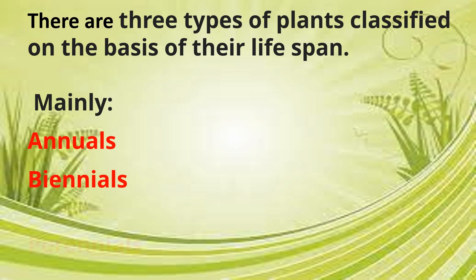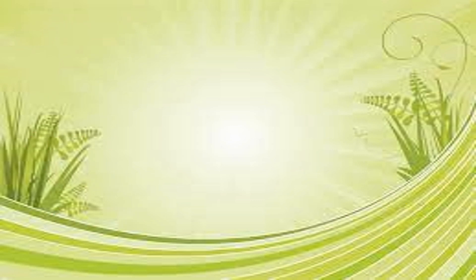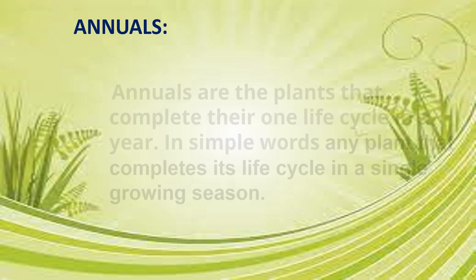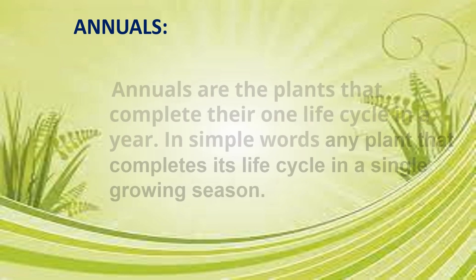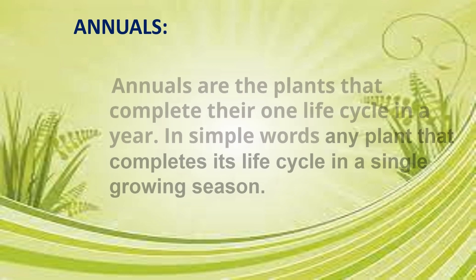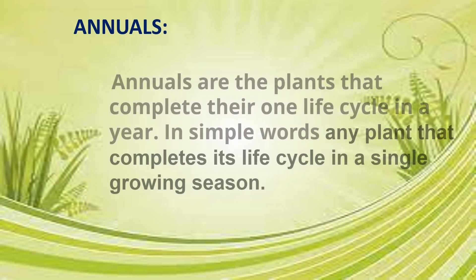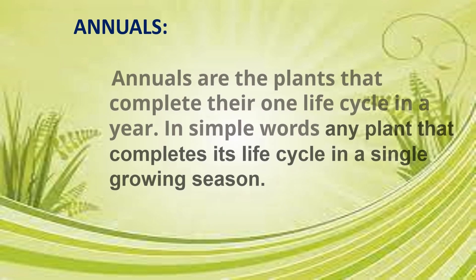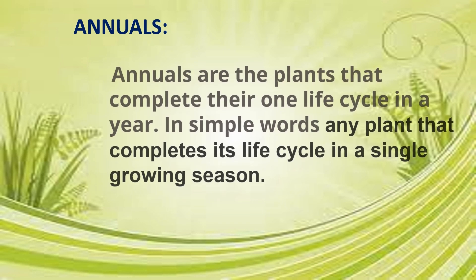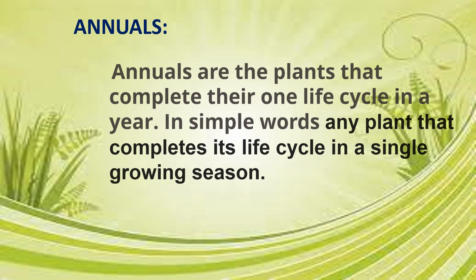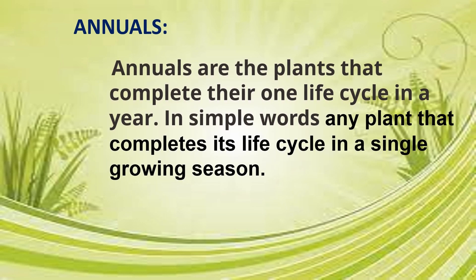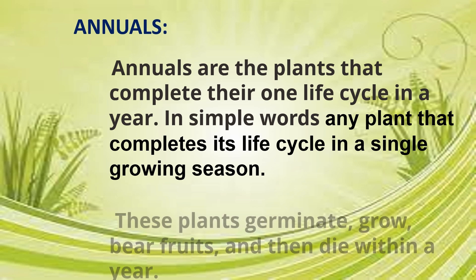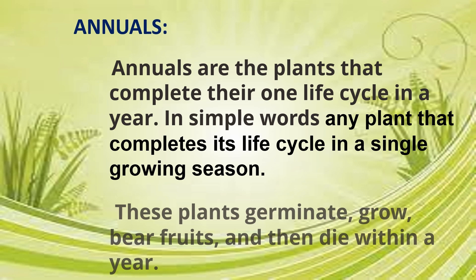Annuals: what are annuals? Annuals are the plants that complete their one life cycle in a year. In simple words, any plant that completes its life cycle in a single growing season. These plants germinate, grow, and bear fruits, and then die within a year.